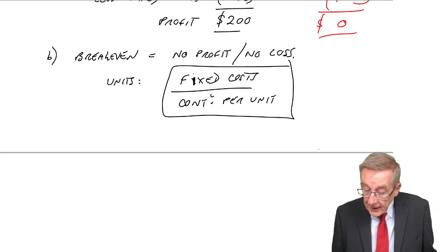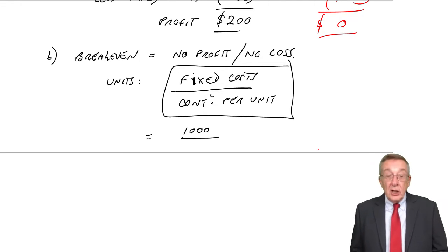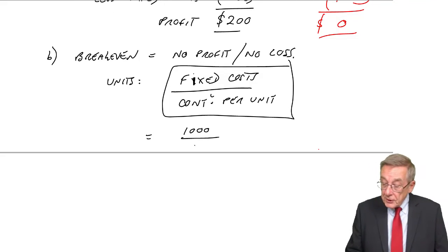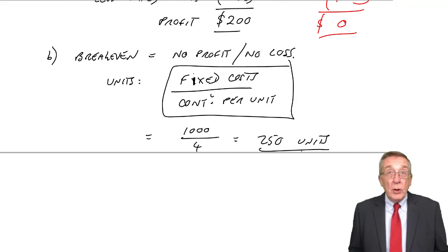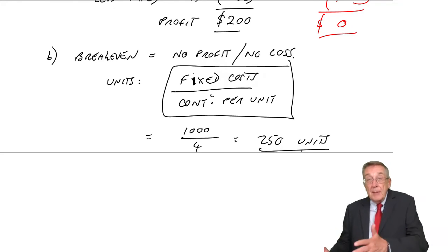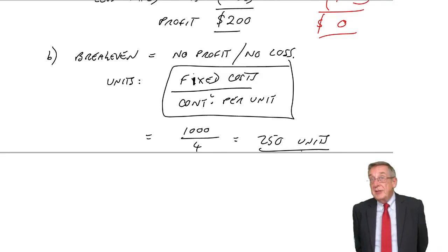Again, in this particular one, the fixed costs are $1,000, the contribution per unit is 4. So it's 250 units. And what's so important, they're budgeting on 300 units. They hope it will be 300, but they accept budgets can be wrong. It may be more, may be less. But as long as we sell more than 250 units, at least we'll make a profit. If we ever sell less than 250 units, then we'll be making a loss.